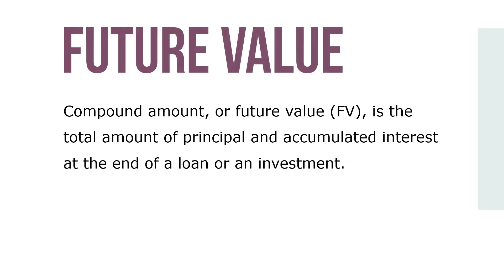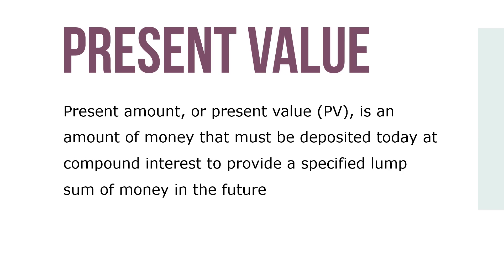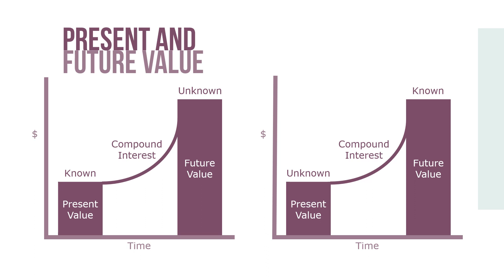The compound amount, or future value — also called FV — is the total amount of principal and accumulated interest at the end of a loan or an investment. Present amount, or present value — also called PV — is an amount of money that must be deposited today at compound interest to provide a specified lump sum of money in the future. You can learn to calculate the future value of an investment at compound interest when the present value is known, and also to calculate the present value that must be deposited now to yield a known future amount.